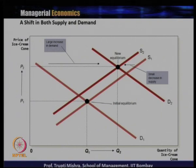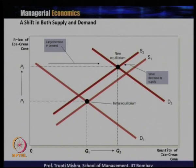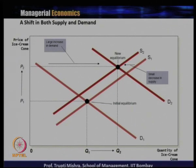Corresponding to the new level of demand and new level of supply — D2 and S2 — we get the new equilibrium price as P2 on the y-axis, and we get the new quantity as Q2 on the x-axis. Here, the increase in demand is greater than the decrease in supply. Demand is increasing, supply is decreasing, and that leads to a scenario where at the new equilibrium there is both an increase in price and increase in quantity. So when there is an increase in demand and decrease in supply, the equilibrium price and quantity both increase — but the key point is that the increase in demand is more than the decrease in supply.